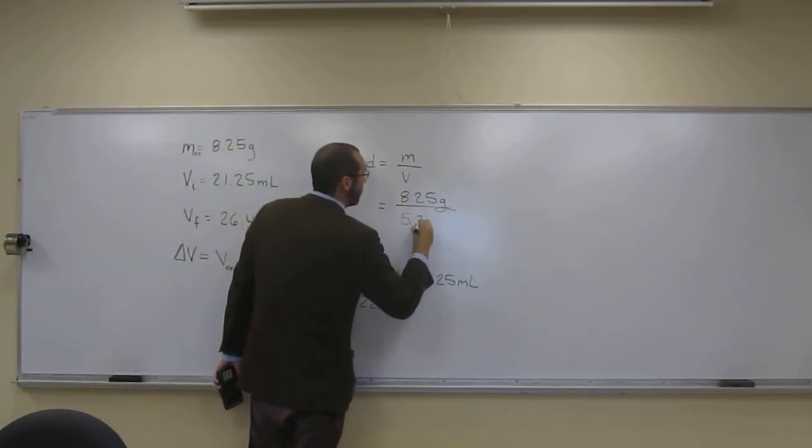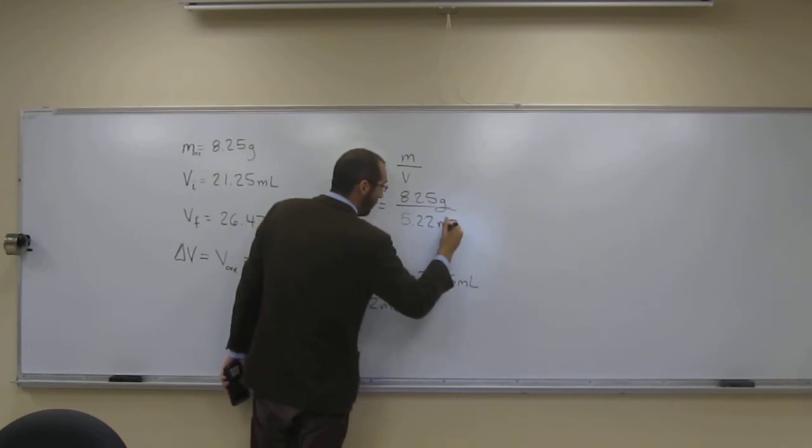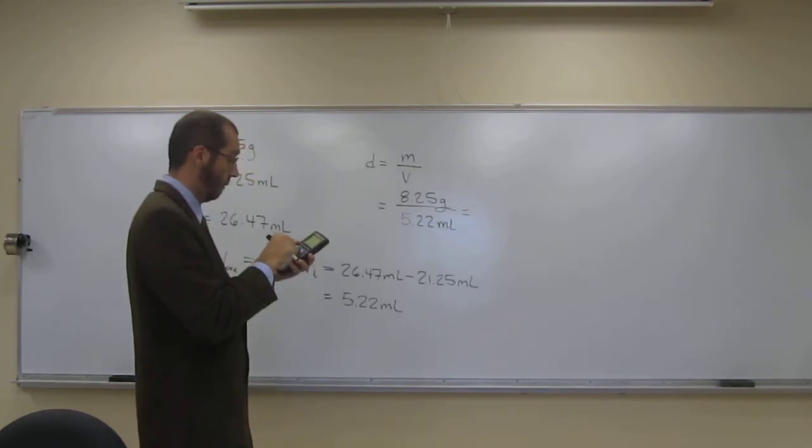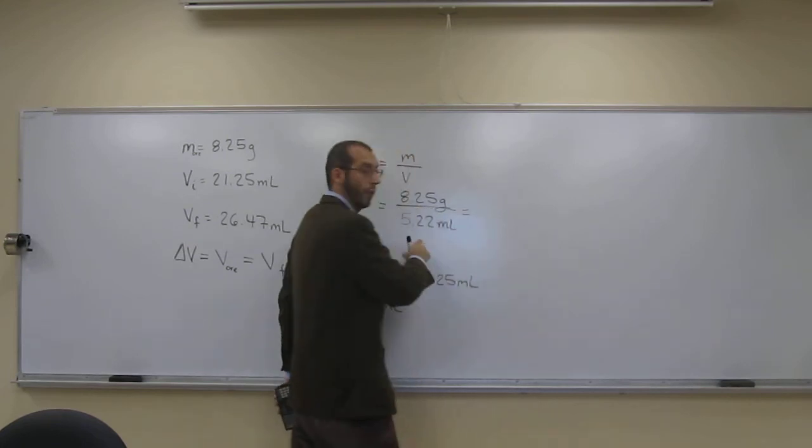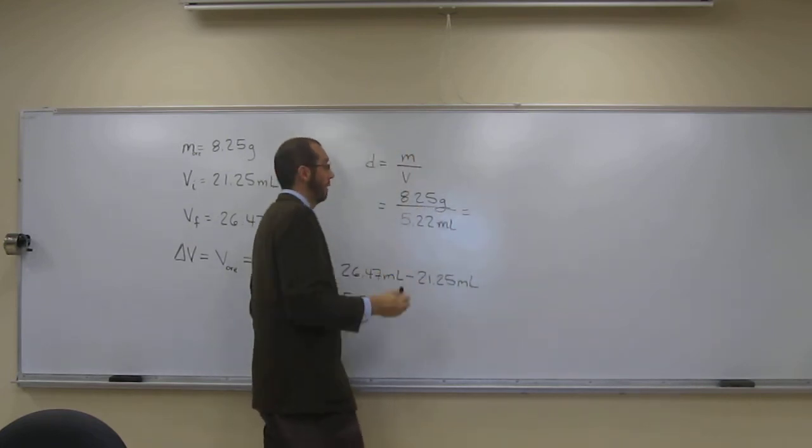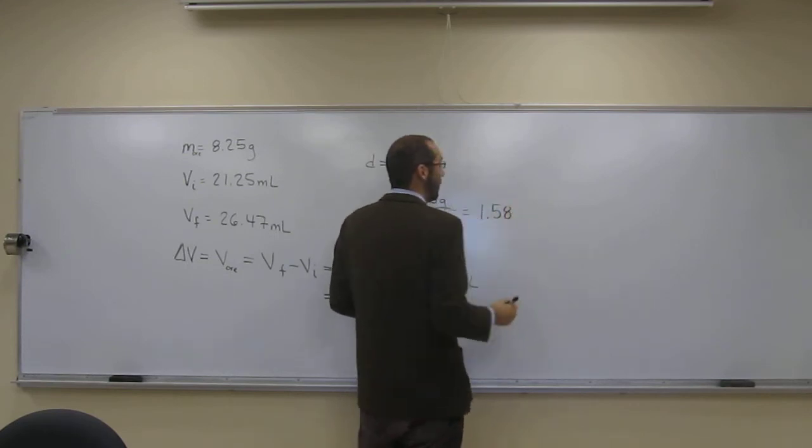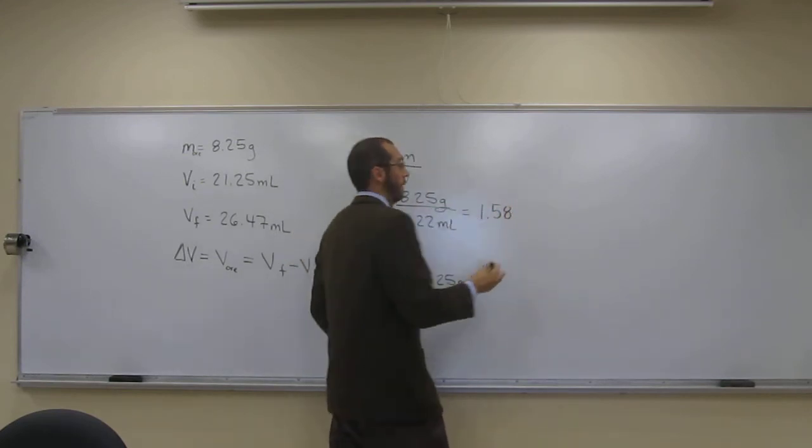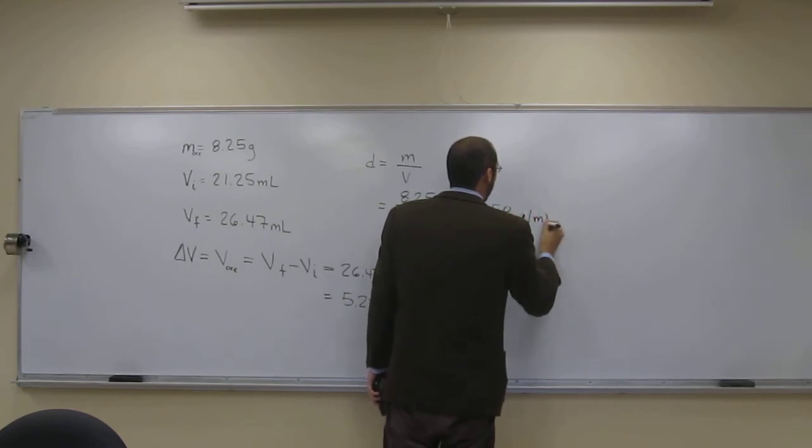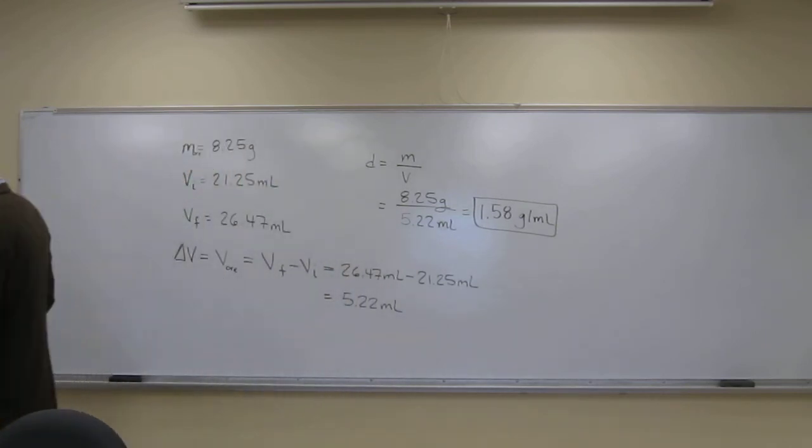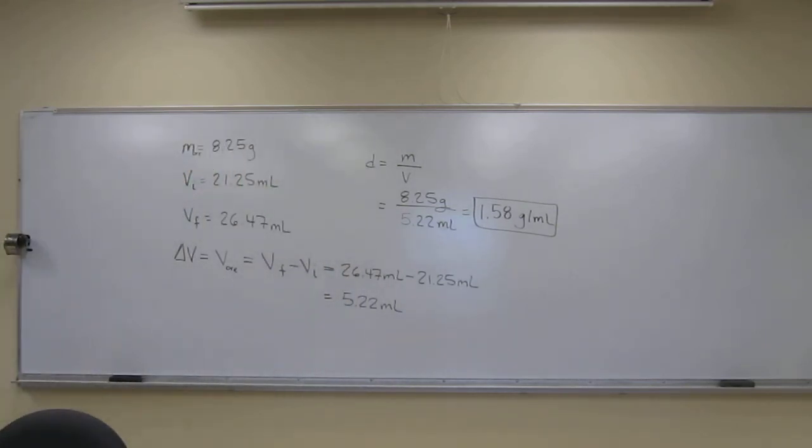5.22 mils. So how many sig figs? Three. So 1.58 in units, grams per mil. So that's the density of the ore. Questions?